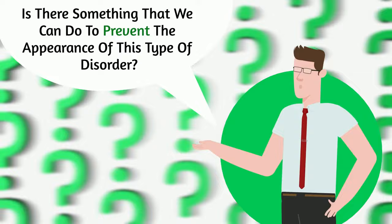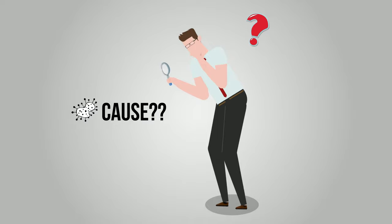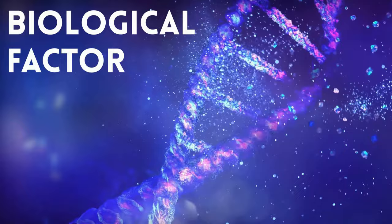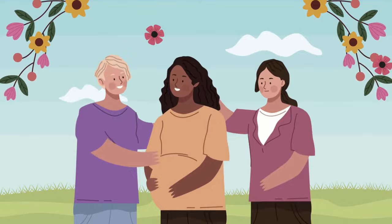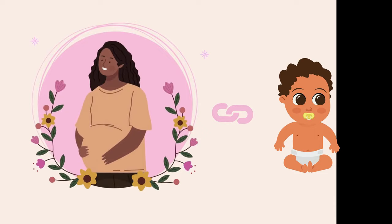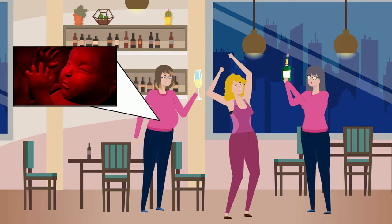You might ask yourself, is there something that we can do to prevent the appearance of this type of disorder? In order to prevent this, we need to understand what might cause the disorder. One of the most important factors in any disorder or disease present in early formative years is the biological factor. Everyone knows that a healthy pregnancy is essential for the physical and cognitive development of the fetus, but what few people know is that some behavioral changes are directly related to that period.